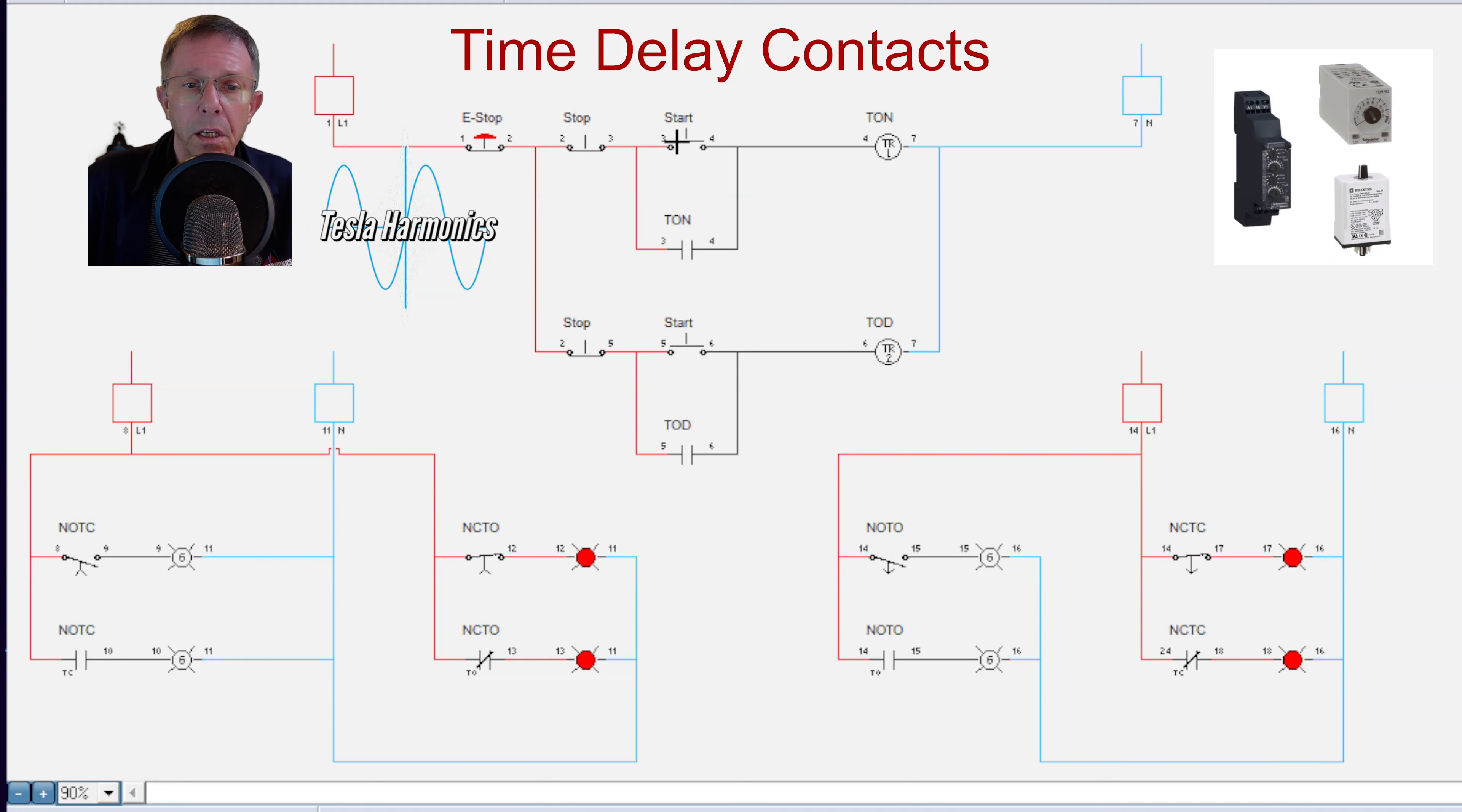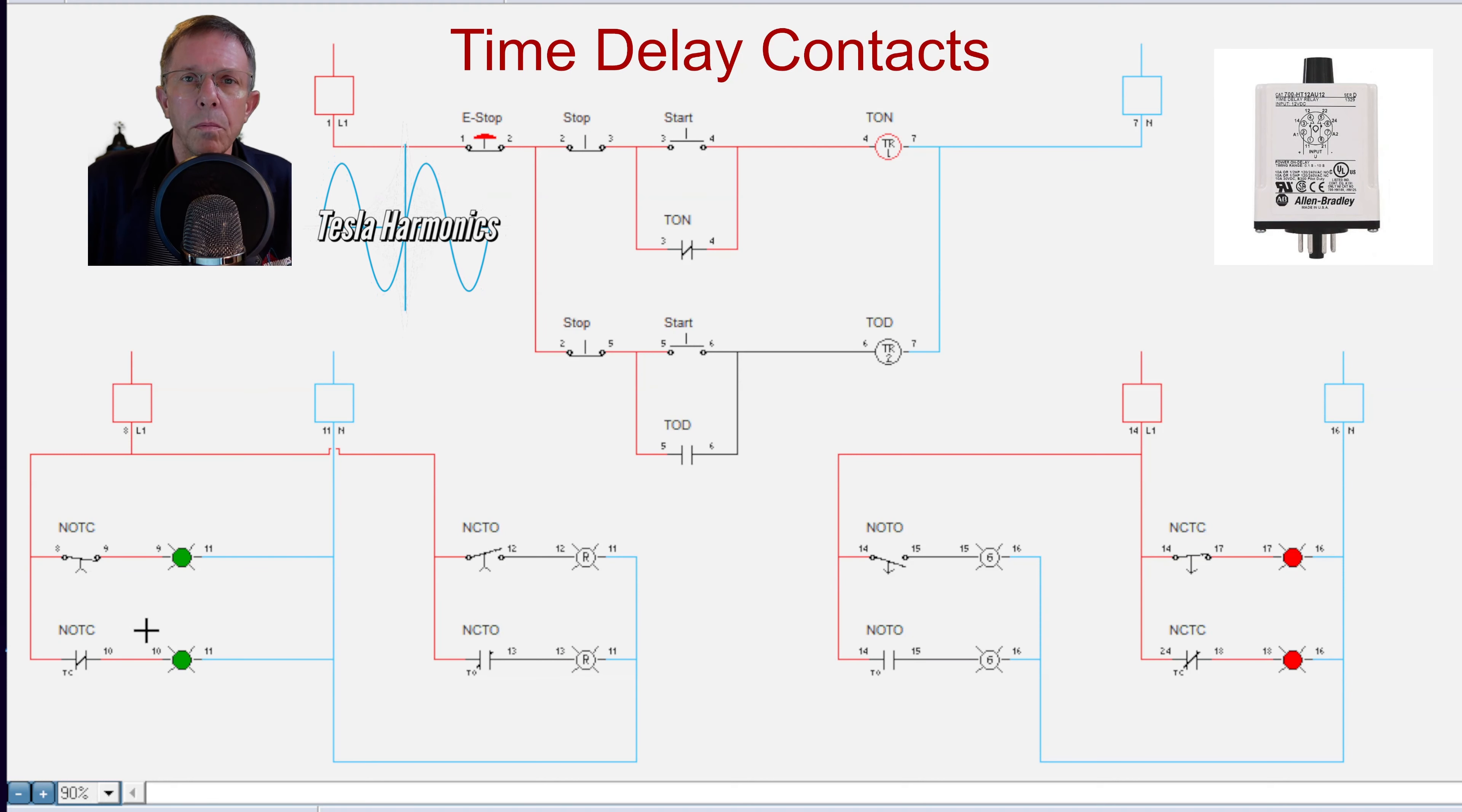If we hit start and energize that coil, it counts one, two, three, closes the two open ones and turns on the green light, opens the two closed ones and turns off the red one.